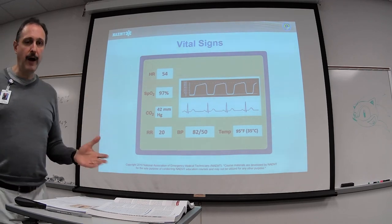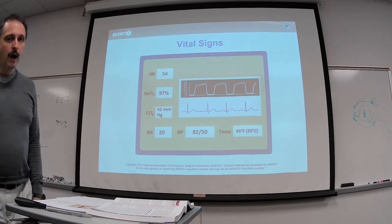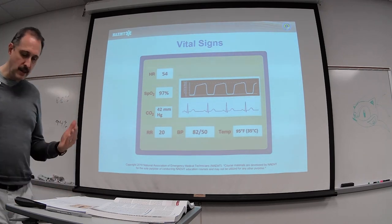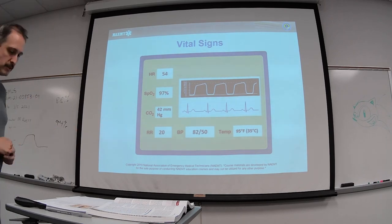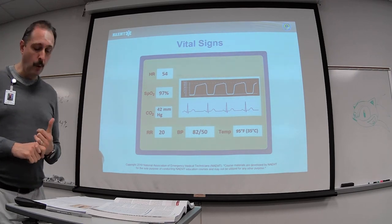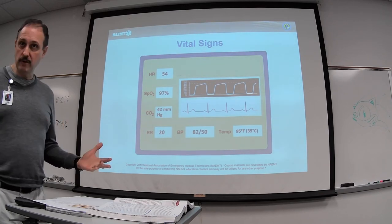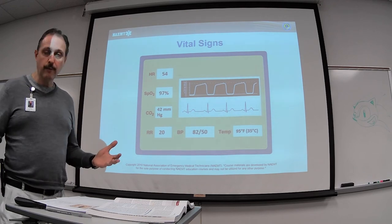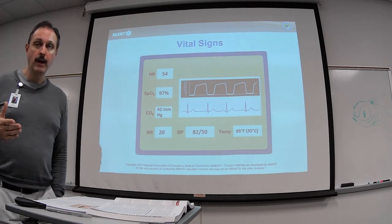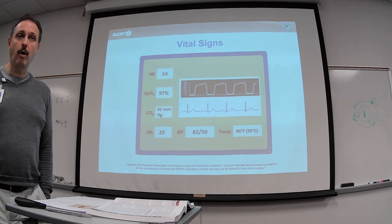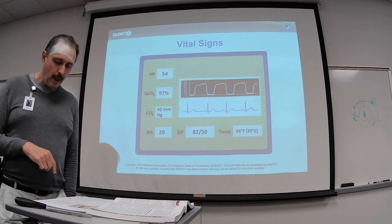Glasgow Coma Scale is about 10: eye opening response 4, verbal response 5, motor function only 1 because the patient cannot move his arms or legs. Glucose is 100 — not hypoglycemic, not hyperglycemic, so that's stable. Skin is still warm and pink.